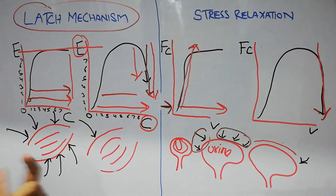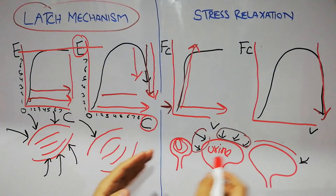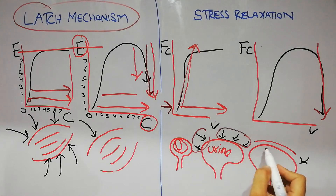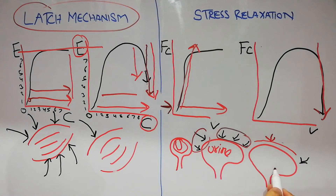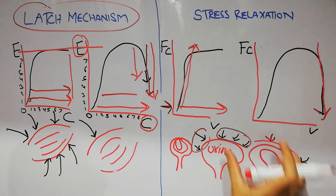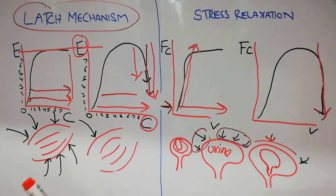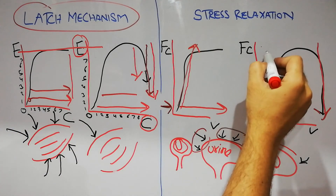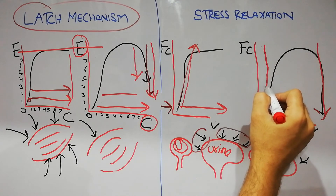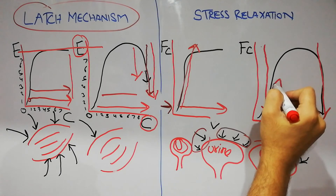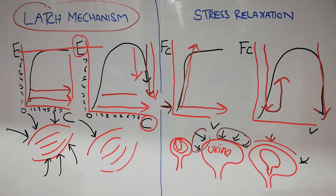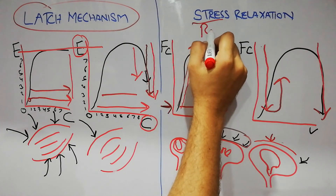The reverse stress relaxation also occurs. Suppose the smooth muscle has a lot of pressure and suddenly the volume decreases — for example, urine goes out — and the length of the smooth muscle decreases. Initially the force of contraction will decrease tremendously, but after some time it will slightly increase. This slight increase is known as reverse stress relaxation.